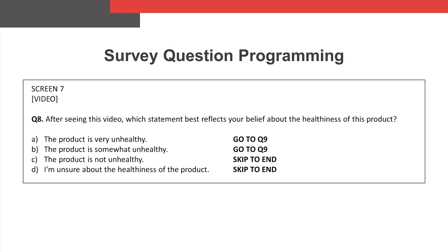Here's an example of survey programming for a question administered to an online panel of respondents that fit the demographic criteria. As this example illustrates, respondents can only choose from one of four possible predetermined responses. As respondents complete the survey, their journey is tightly controlled. The survey stimuli that respondents are exposed to is carefully curated by the researcher.